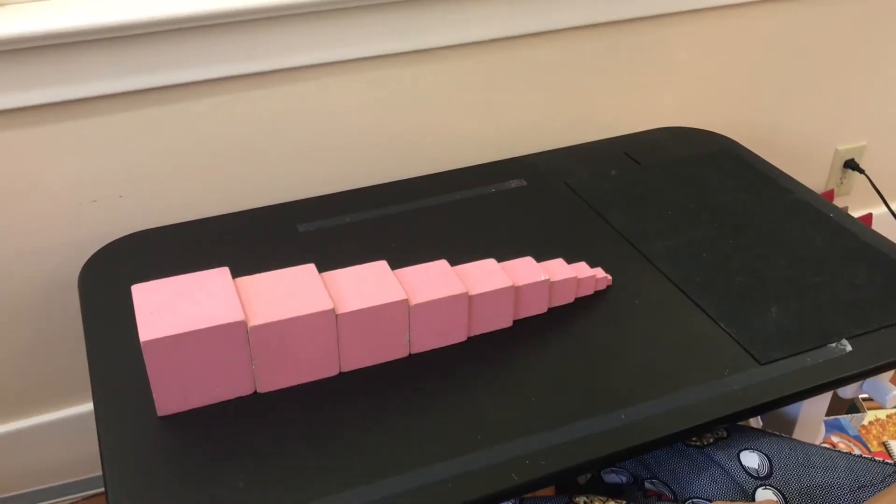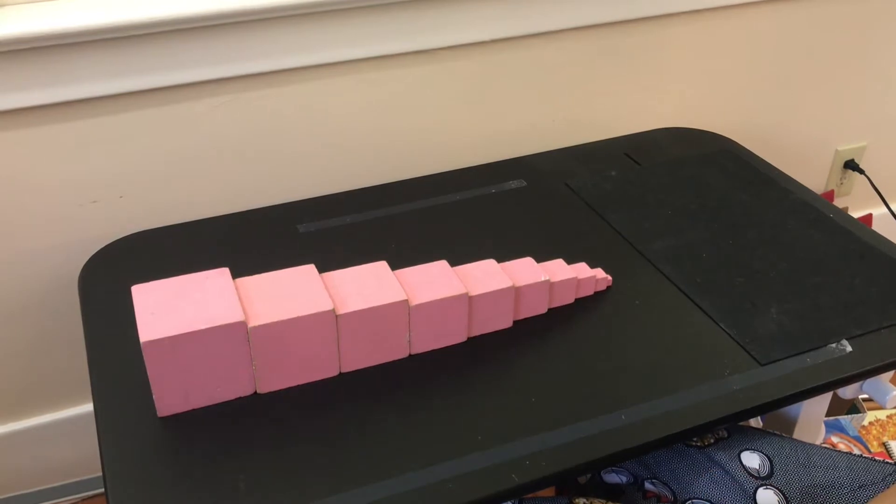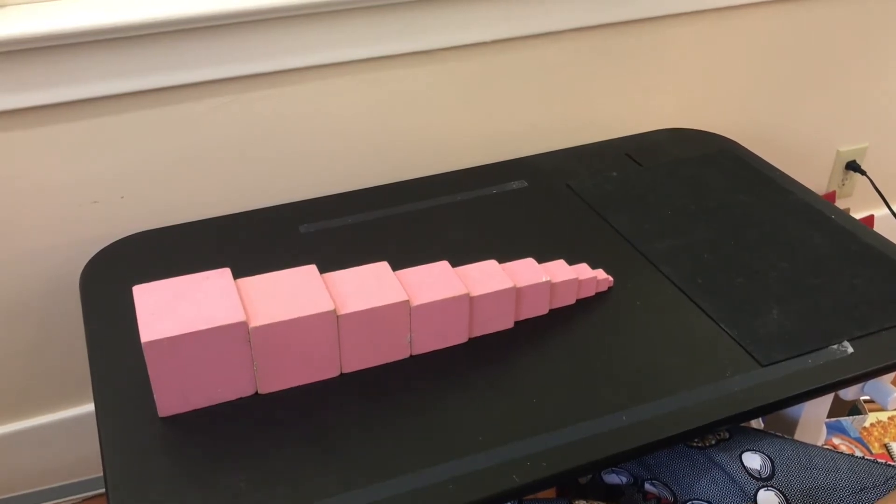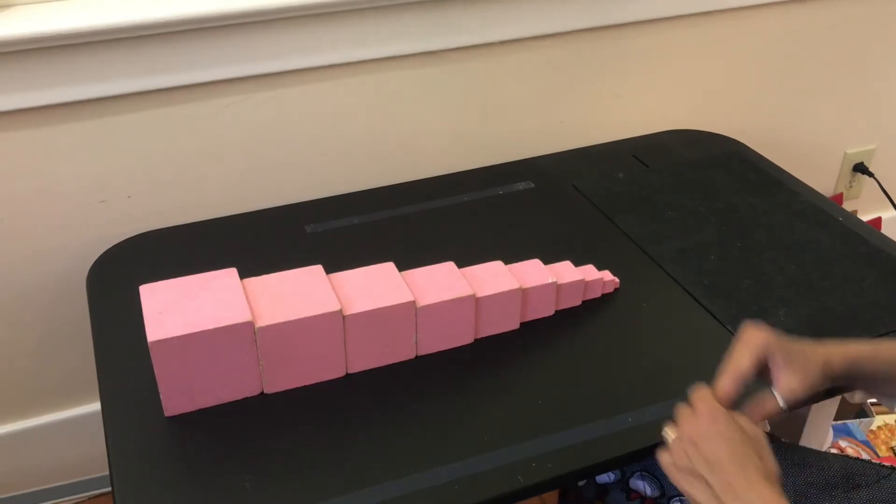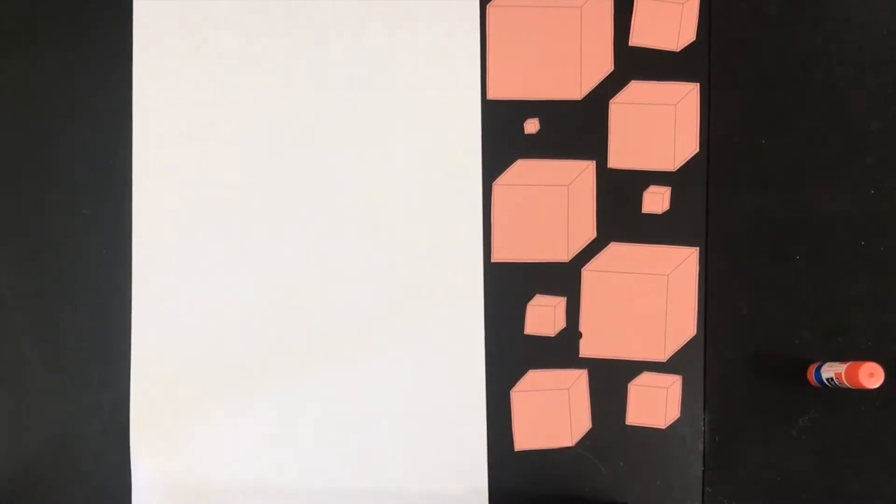Now we're going to use the paper cube activity that's in your packet to do it two-dimensionally. Okay, now you get to make your own pink tower. You'll find this in your activity packet. So let's start with the biggest one.